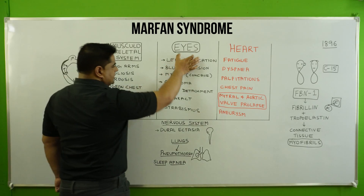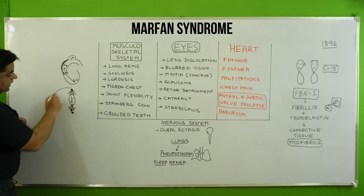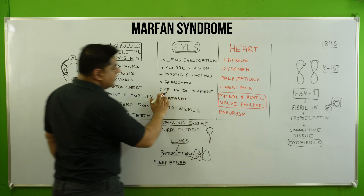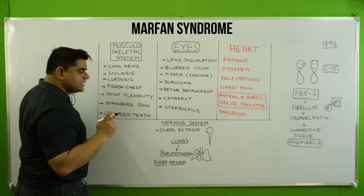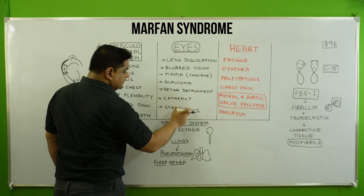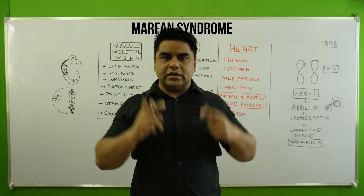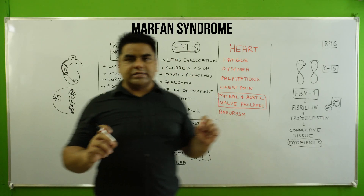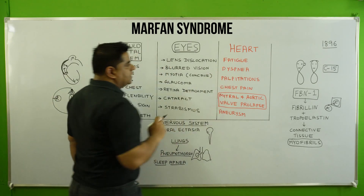Moving to the eyes: lens dislocation can occur, which can damage the retina layer and cause retinal detachment. When the lens is disturbed, blurred vision and myopia — near-sightedness — will occur, which is treated with a concave lens. Then there is cataract, and strabismus, which is the misalignment of the external muscles of the eye, also known as crossed eyes.